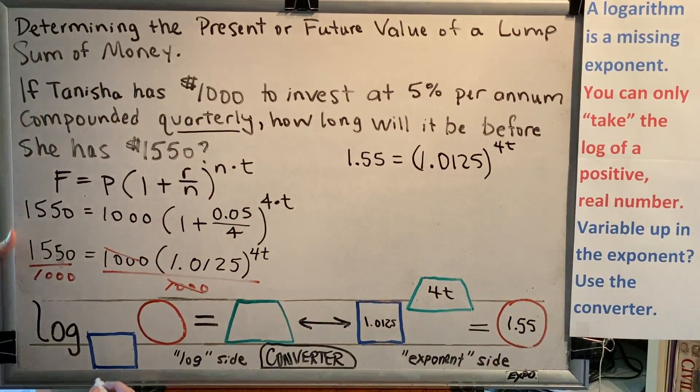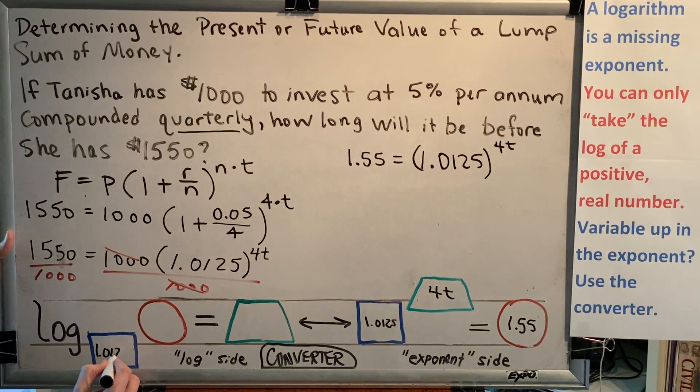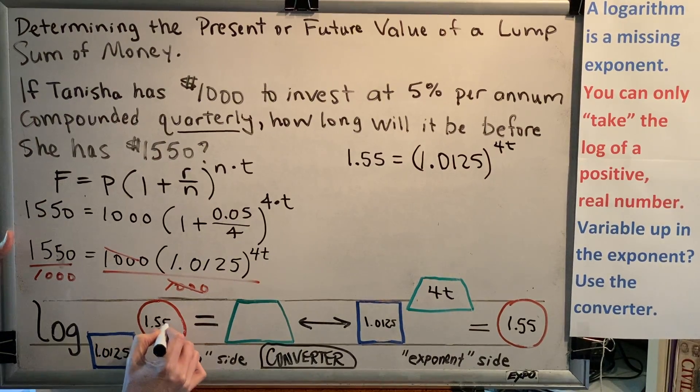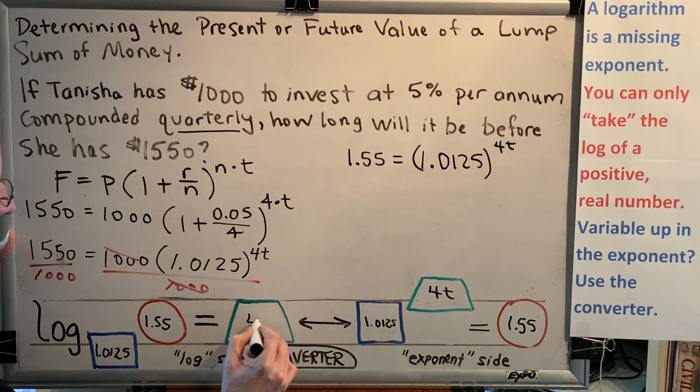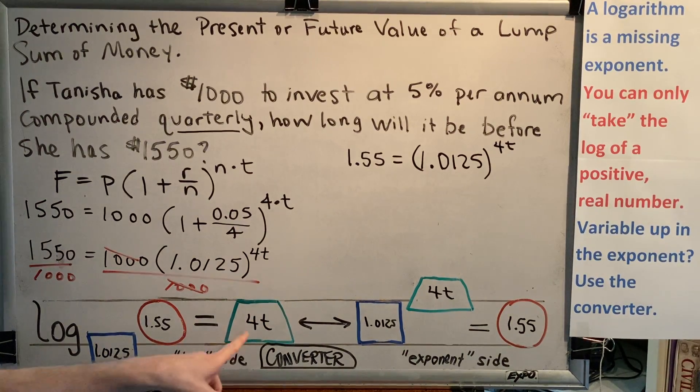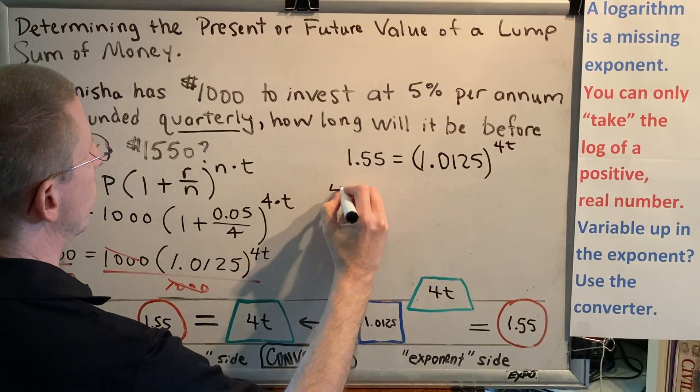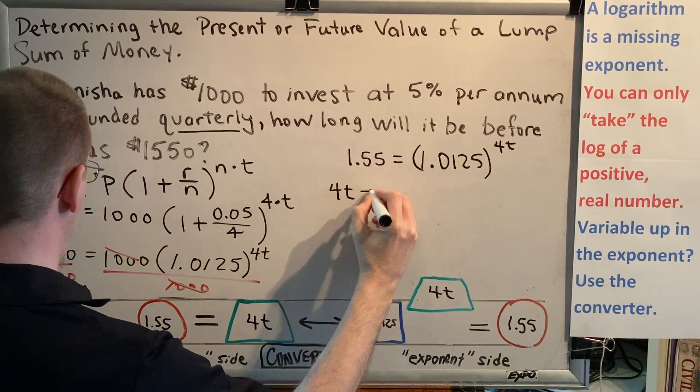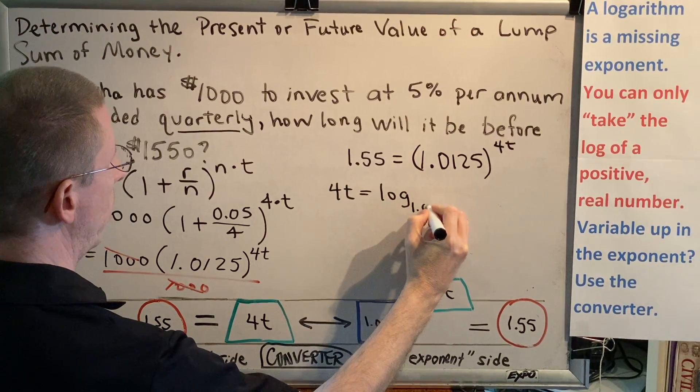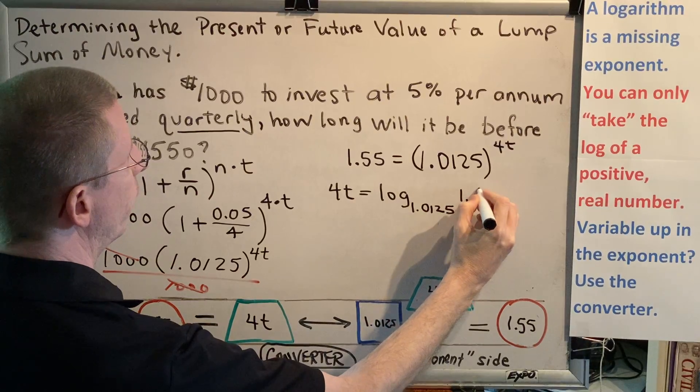Matching up the colors and shapes on the other side, we'll have log base 1.0125 of 1.55 equals 4t. Using our converter has allowed us to get the t on the ground so that we can more easily solve for it. So we now have the statement 4t equals log base 1.0125 of 1.55.